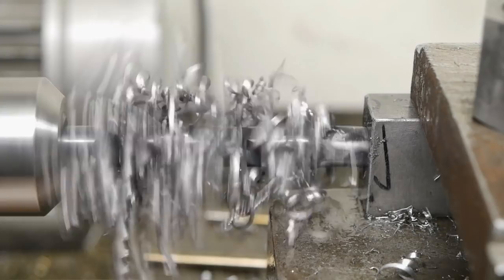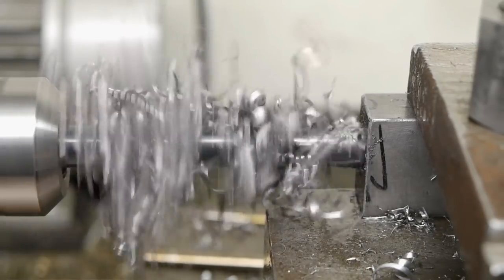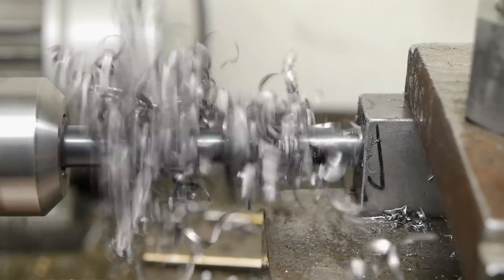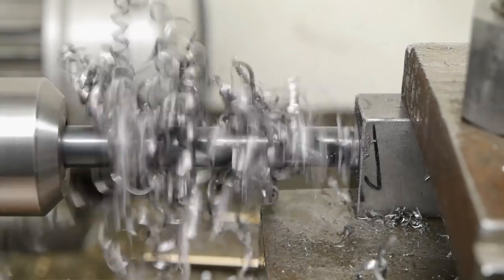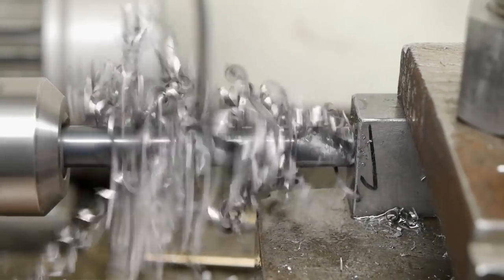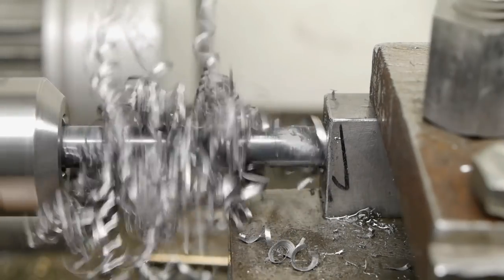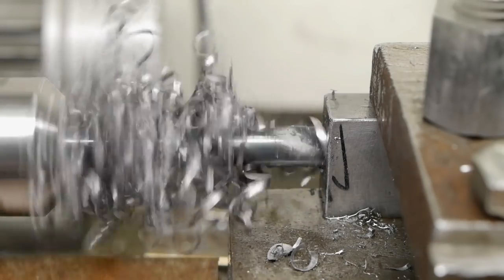I'm looking at the amperage gauge on the frequency drive. It's reading about 3 amps when I turn the top slide. And when it goes up, it's time to clear out the chips.